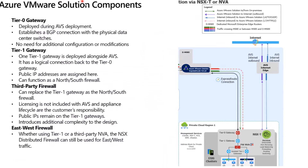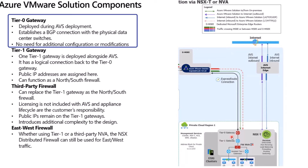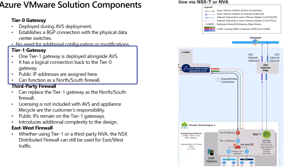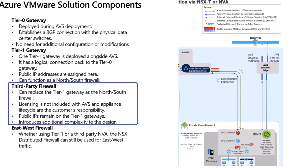Let's go over some of the Azure VMware Solution components that are part of this deployment. One of the things to cover is the Tier 0 gateway, which is always going to be deployed during your AVS deployment. It establishes a BGP connection with the physical data center switches within our environment. There is no need for additional configuration or modifications to the Tier 0. You also have a Tier 1 gateway, which is deployed alongside AVS. It has a logical connection back up to the Tier 0 gateway, and your public IP addresses are going to be assigned here. The Tier 1 can also function as a North-South firewall, filtering and inspecting traffic. If not, you have the option to use a third-party firewall — an NVA — which can replace your Tier 1 gateway as a North-South firewall.